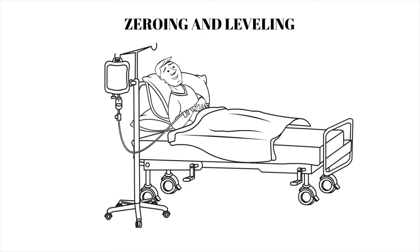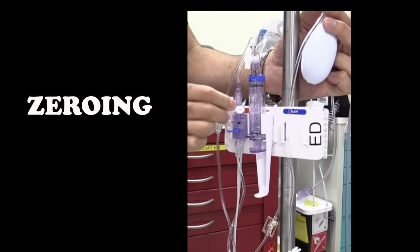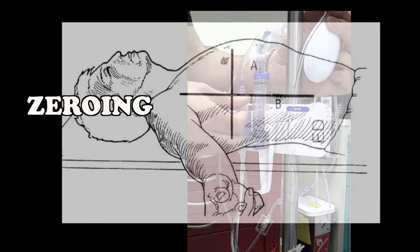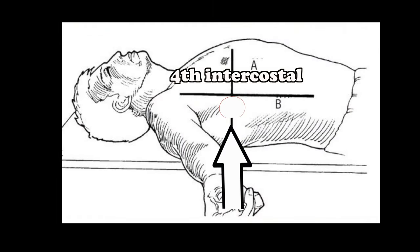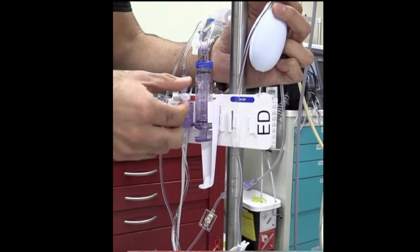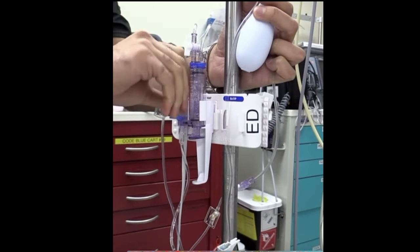Calibration of the system to atmospheric pressure, or zeroing, and determination of the phlebostatic axis for transducer height placement, or leveling, are required. Zeroing the transducer: turn the three-way stopcock open to air and close to the patient and the flush system.